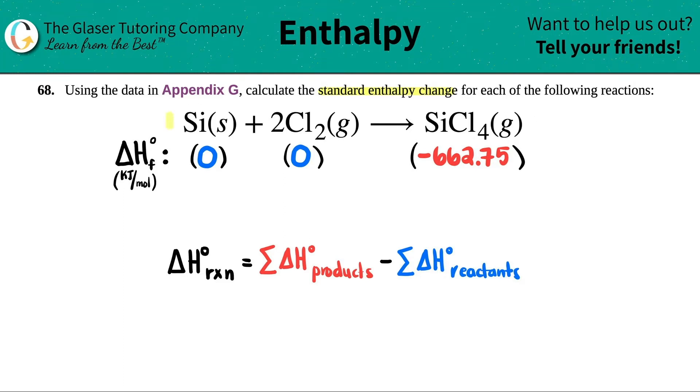So for example, technically we only have one silicon, so you would times this zero by one. I know that it's going to be still zero, but I just want to show you the process so that you guys are equipped with all the knowledge.